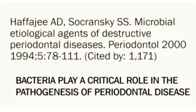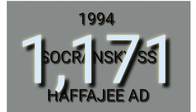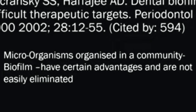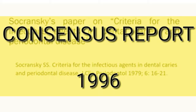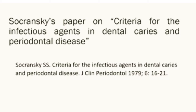Now we'll see a few landmark studies on pathogenesis of periodontitis. Socransky and Haffajee's paper on microbial etiological agents of destructive periodontal disease (1994) spoke about how bacteria play a critical role in the pathogenesis of periodontal disease — highly cited, 1,171 times. In 2002, Socransky and Haffajee published a paper on dental biofilms as difficult therapeutic targets, discussing how microorganisms organize into a community (a biofilm) with certain advantages, making them not easily eliminated. There is also the 1996 consensus report on periodontal diseases — pathogenesis and microbial factors — which comprised an extract from Socransky's 1979 paper on criteria for infectious agents in dental caries and periodontal diseases.